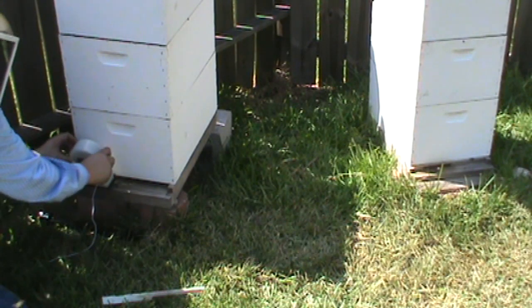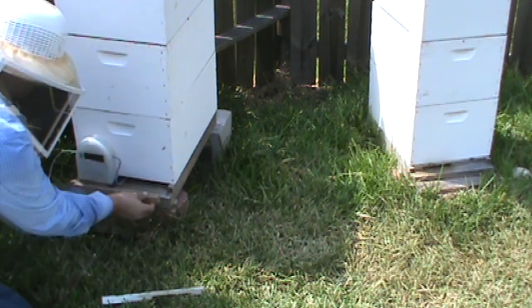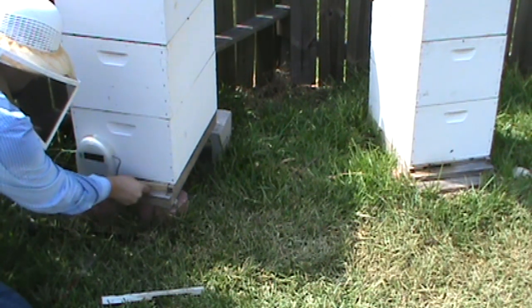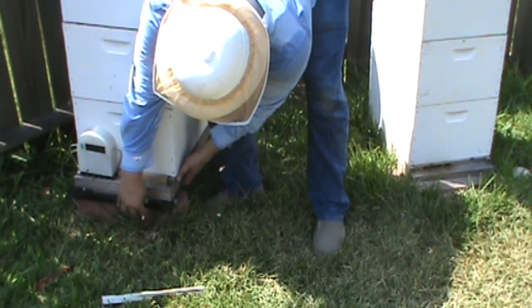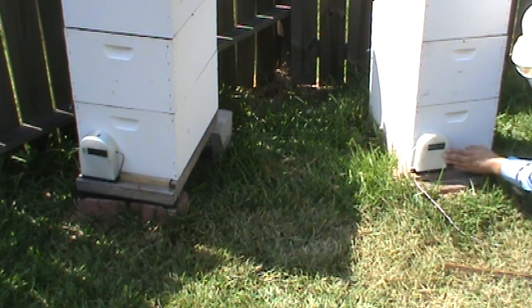To install, simply slide the unit in your hive entrance, introduce the probe, block the rest of the entrance, and position the weight sensors. Oh, and you might want to use gloves. Ouch!